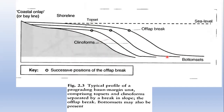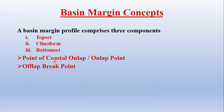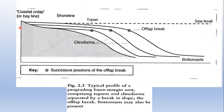The bottomset is the portion of the basin margin profile at the base of the clinoform. Like the topset, the bottomset has a low gradient and contains deep water depositional systems. The proximal termination of the topset is termed the point of coastal on-lap, or on-lap point — in simple words, the point where the ocean touches the continent.